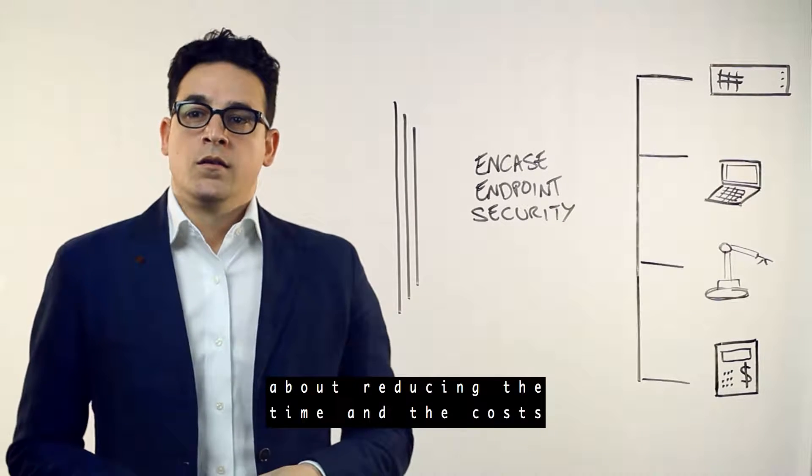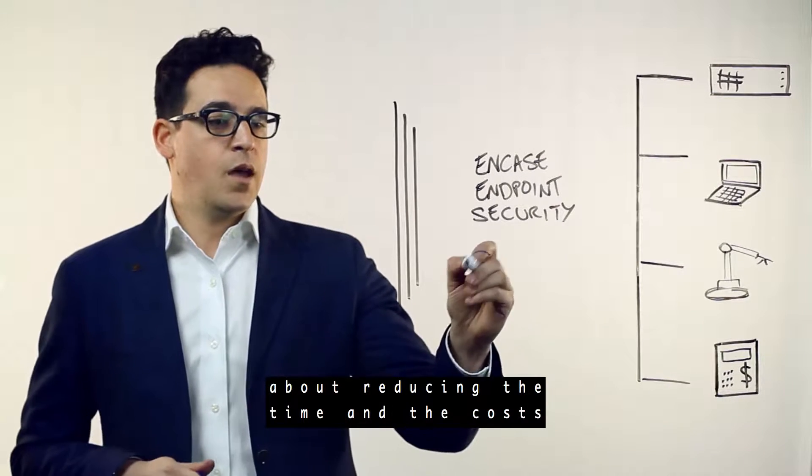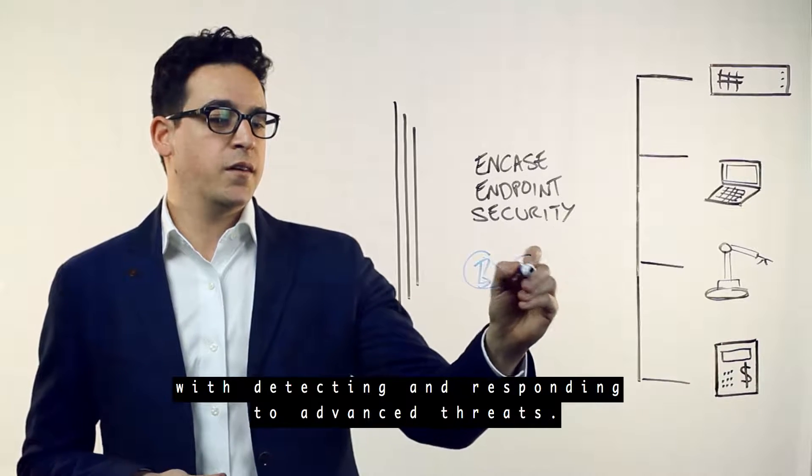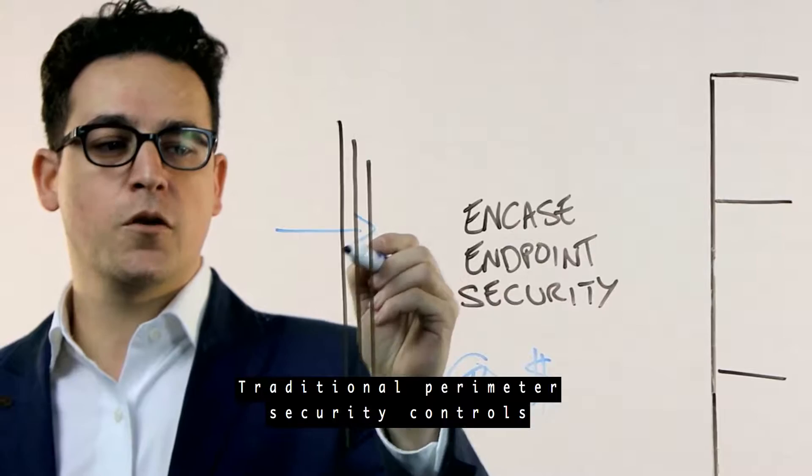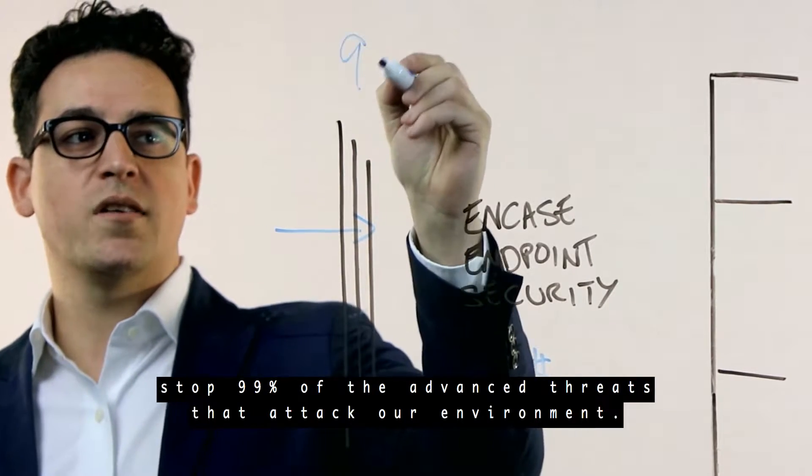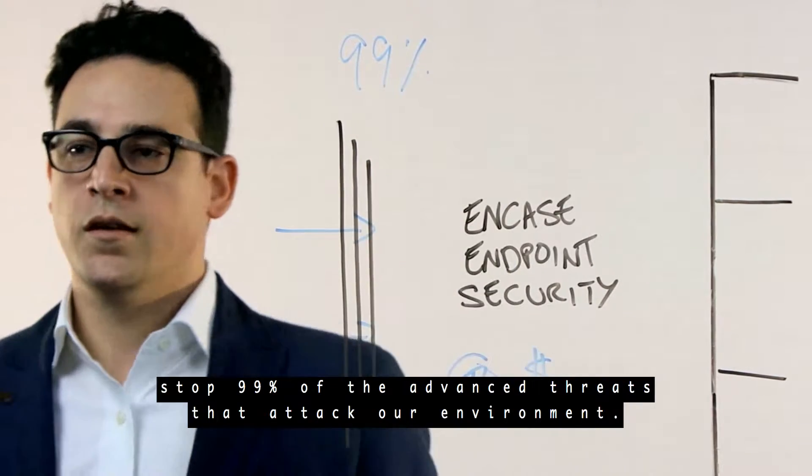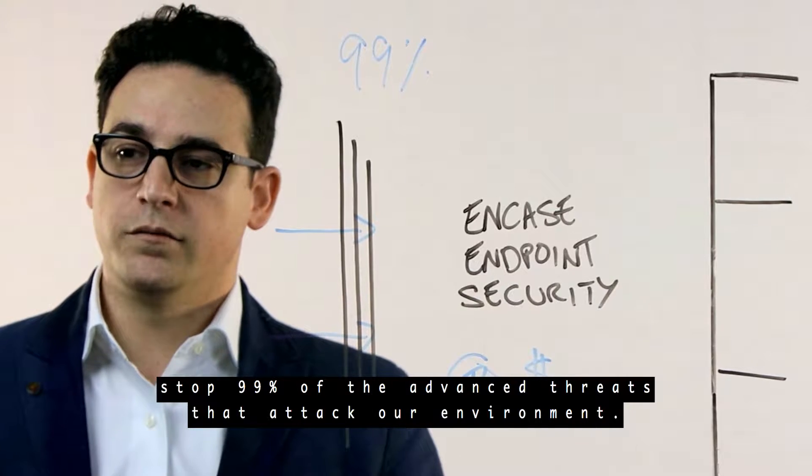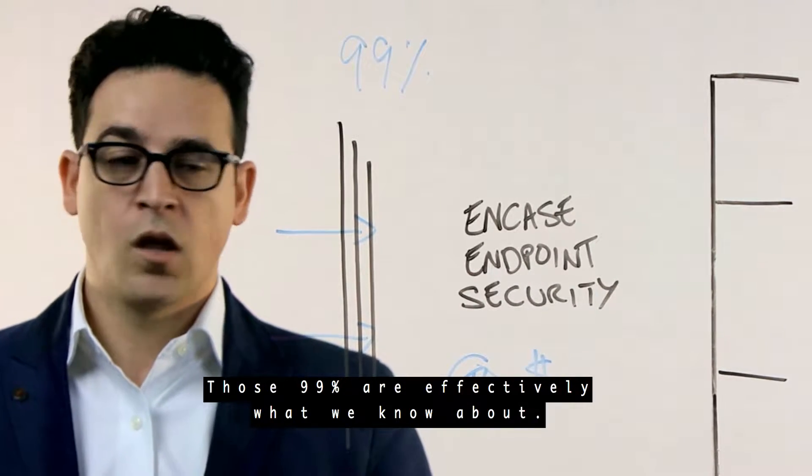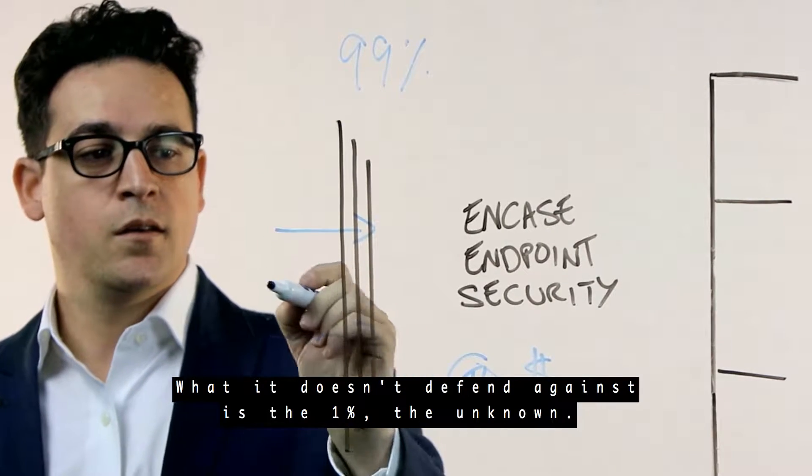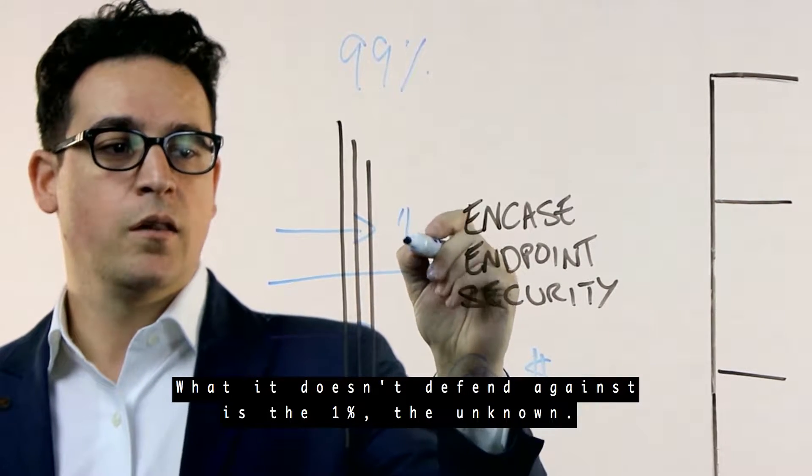Today we're here to talk about reducing the time and cost with detecting and responding to advanced threats. Traditional perimeter security controls stop 99% of the advanced threats that attack our environment. Those 99% are effectively what we know about. What it doesn't defend against is the 1%, the unknown.